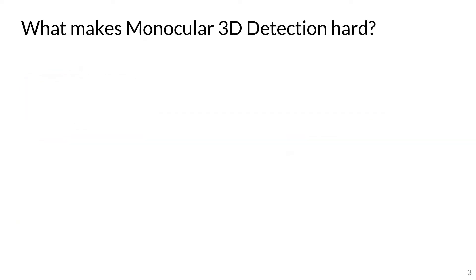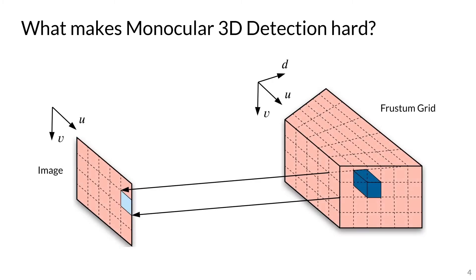To start, I'd like to ask a simple question. What makes monocular 3D detection so hard? Well, monocular cameras do not capture depth, since depth is lost when 3D scene information is projected back onto the image plane. Without depth, locating objects in 3D space, especially the depths of objects, is very challenging.